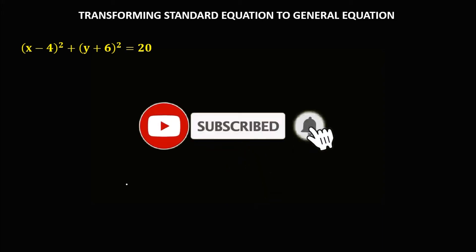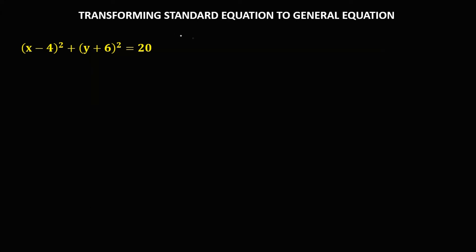Welcome to MathStoria. Let's work on this problem: transforming a standard equation to general equation. We have this given, and to rewrite this equation in general form, for this square of a binomial, we're going to use the SMS method.